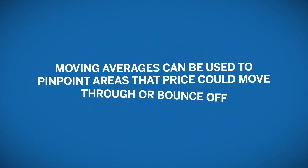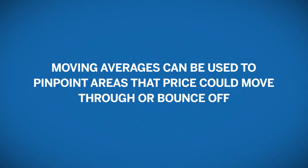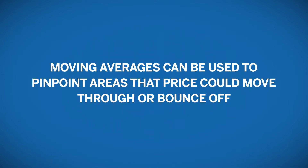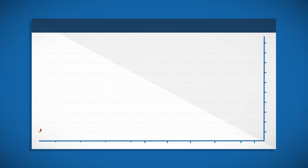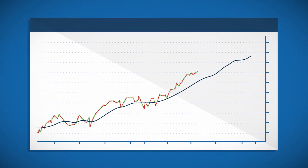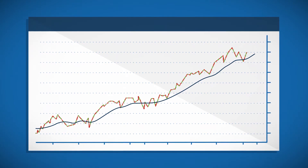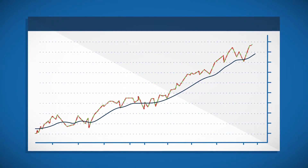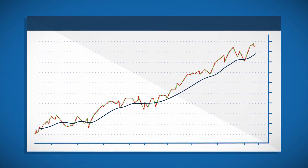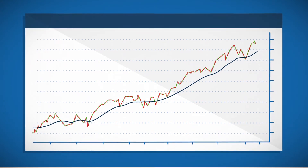As price moves to areas that a trader believes are support or resistance, moving averages will be used to pinpoint areas that price could move through or bounce off. For example, if price is moving up, then retraces to the 55 period moving average, then starts to move back up, there is a good chance that the level will hold as support and price will start to move in the direction of the original trend again.